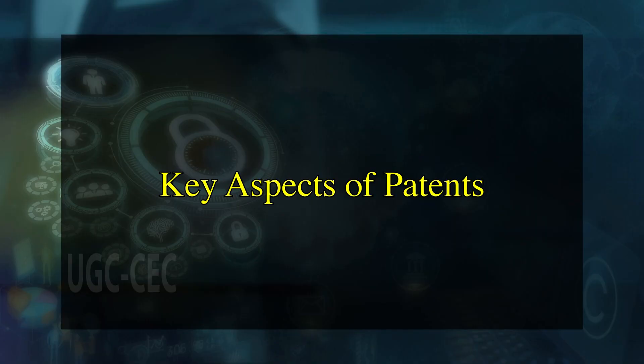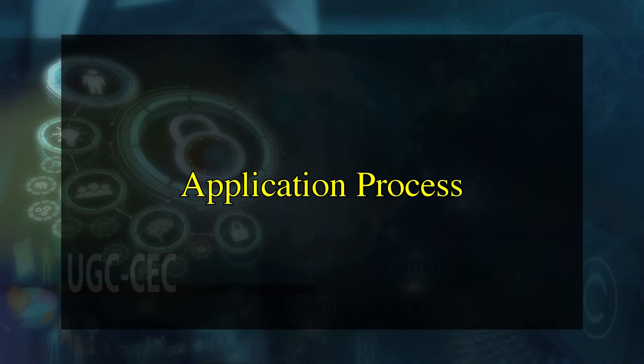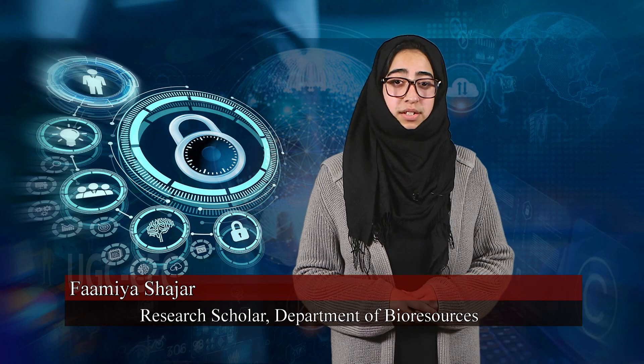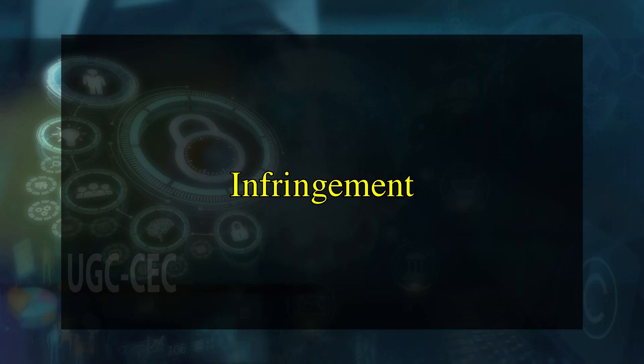Now we will discuss some key aspects of patents. Novelty and inventiveness: To be eligible for a patent, an invention must be new, involve an inventive step and be capable of industrial application. Application process: The patent application process involves disclosing the details of the invention to the patent office; upon approval, the inventor gains exclusive rights to the invention. Duration: Patents have a limited duration, typically 20 years from the filing date, after which the invention enters the public domain. Infringement: Patent owners can take legal action against others who make, use, sell or import the patented invention without permission.